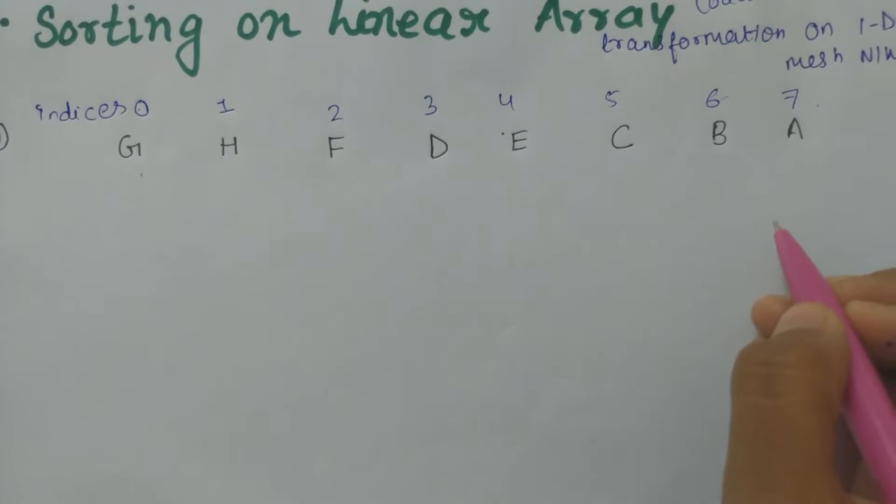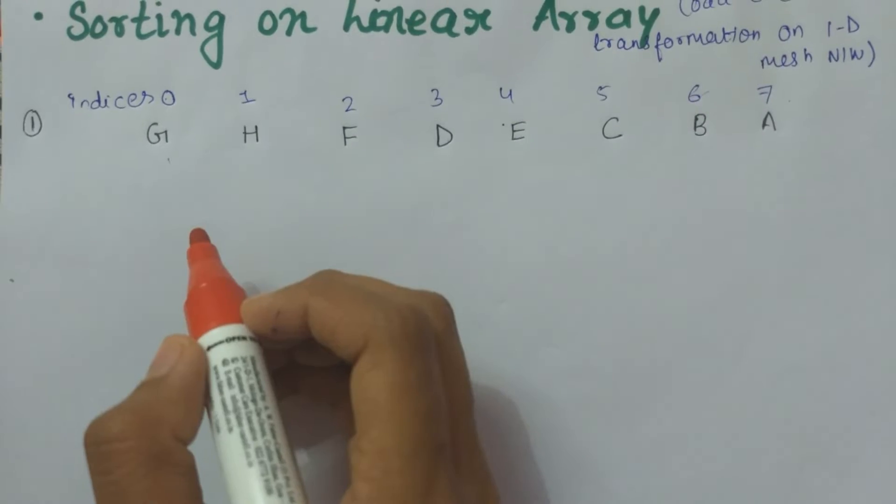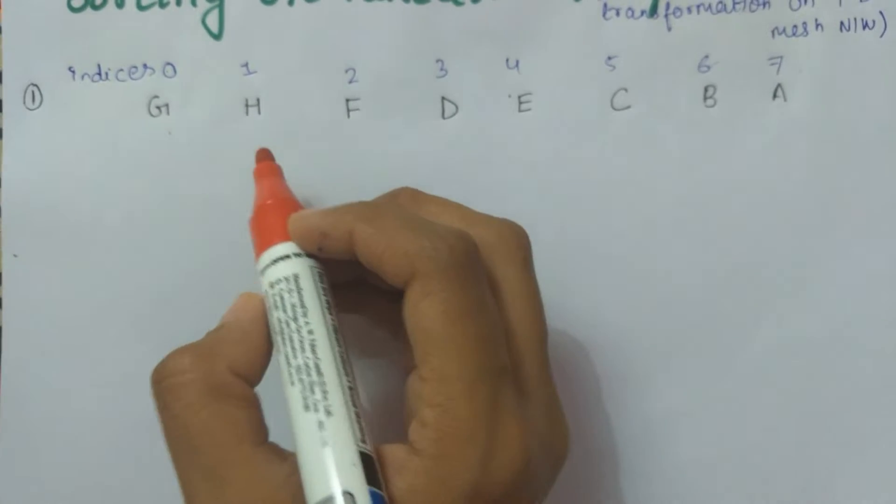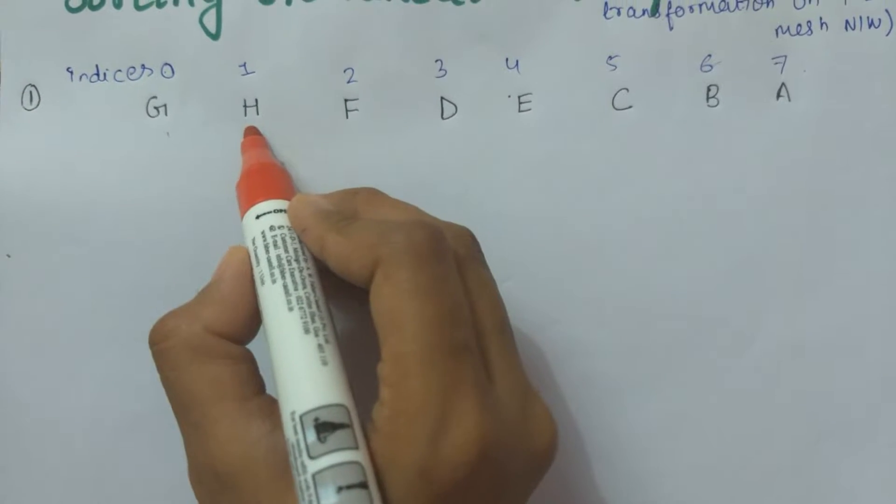Now we will make the pairs. We will make the pair by leaving the first element, so the first pair will be H-F.